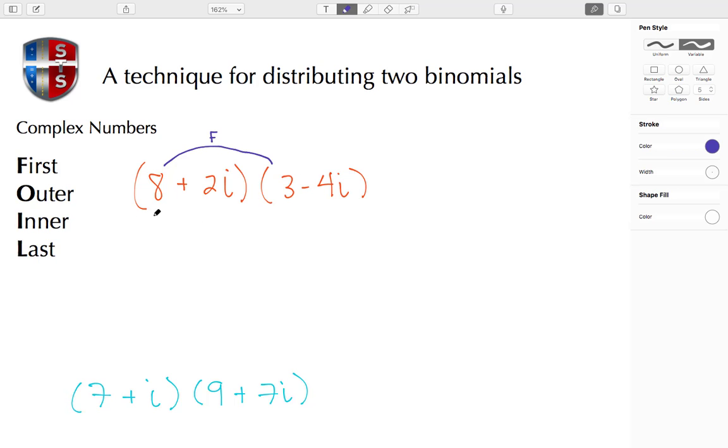So 8 times 3 gives me 24. Then we're going to do Outer, which is going to be the outer two terms, which is going to be the 8 times the negative 4i, which results in negative 32i.